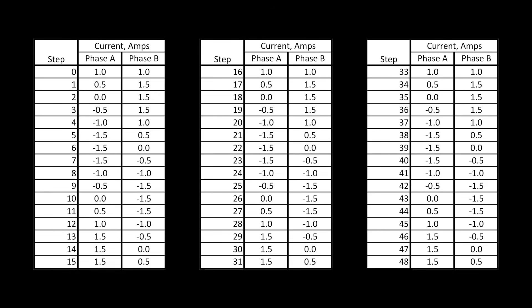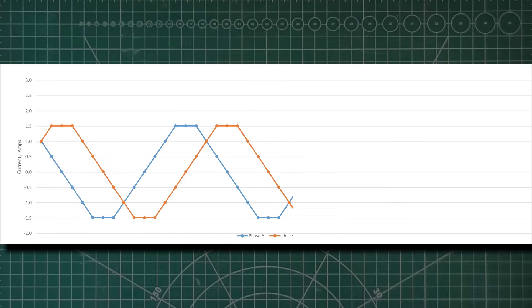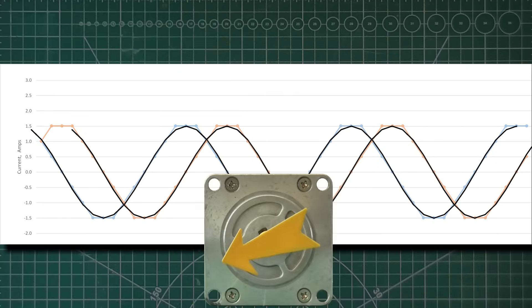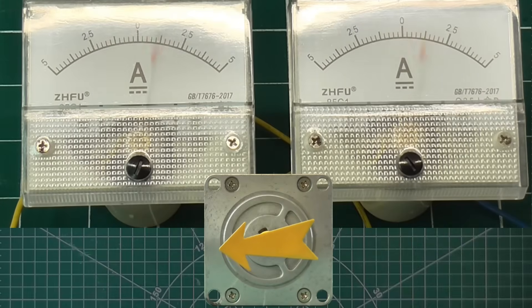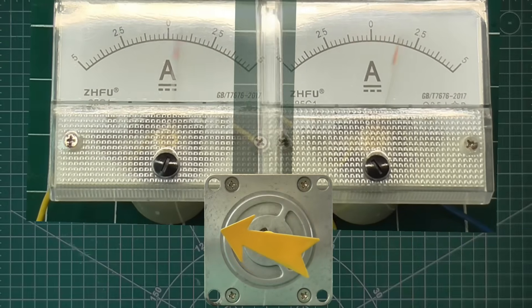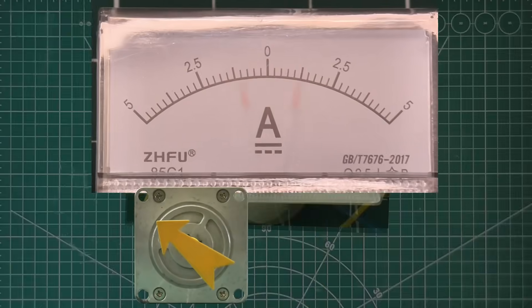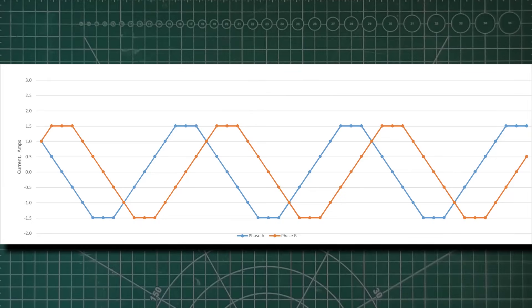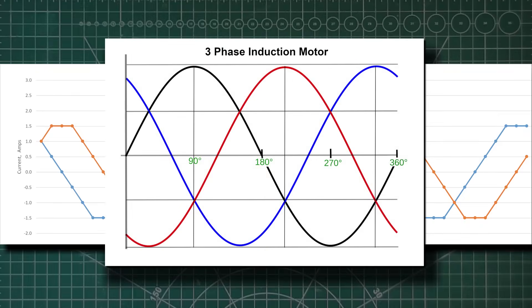Let's see what those values look like plotted on a graph. We can see the voltage applied to each phase approximates a sine wave, with one phase leading the other by a quarter cycle. If I run the motor at a low speed, we can see the needles oscillate regularly back and forth. You might recognize this waveform. It looks very similar to that of an induction motor. A stepper motor is not much different, it just moves in discrete steps.